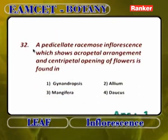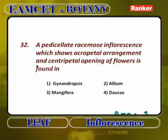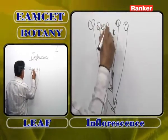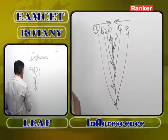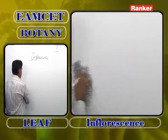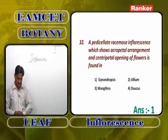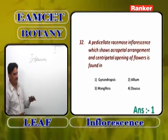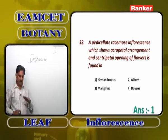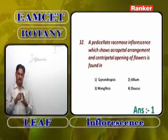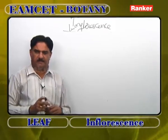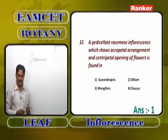A pedicellate racimose inflorescence which shows acropetal arrangement and centripetal opening of flowers is Gynandropsis — peduncle grows indefinitely; flowers are arranged in acropetal succession; lower flowers have long pedicels, upper flowers have short pedicels, so all flowers are at the same height; opening is centripetal. Allium cannot be — it is simple umbel. Mangifera — compound raceme. Dolichos — simple umbel. In Amentum (catkin), flowers are unisexual and sessile. The basic difference: spadix is a straight inflorescence with unisexual or bisexual flowers; catkin is a weak drooping peduncle with unisexual sessile flowers.